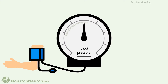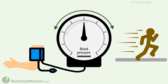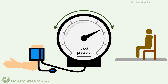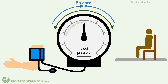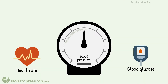Let's take an example of blood pressure. It is normally maintained around 120/80 mmHg, but it is not kept at any fixed value all the time — it is adjusted according to our changing needs. For example, when we exercise, the muscles need more oxygen, so blood pressure increases to meet this increased demand. Once the exercise is done, the pressure is brought back to the initial range. Thus the pressure is kept in balance.